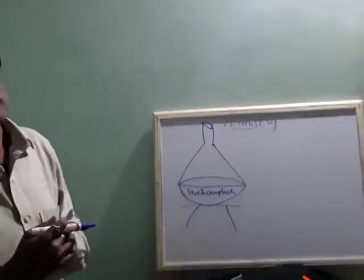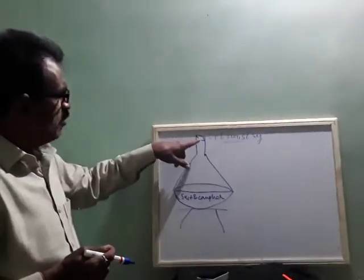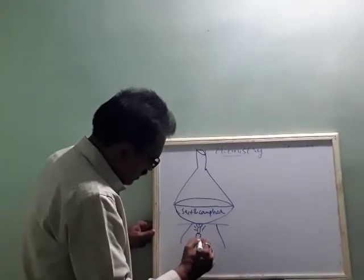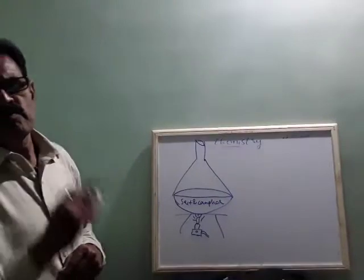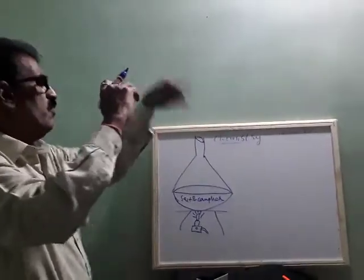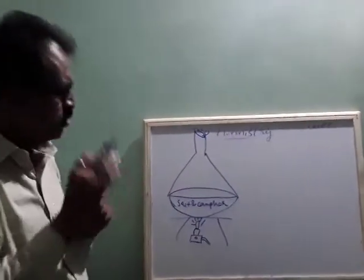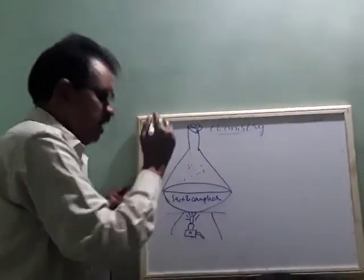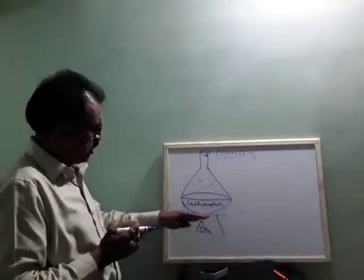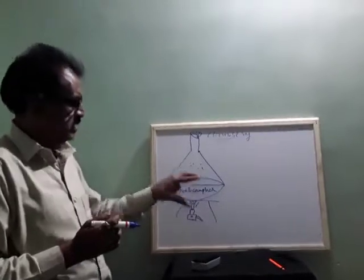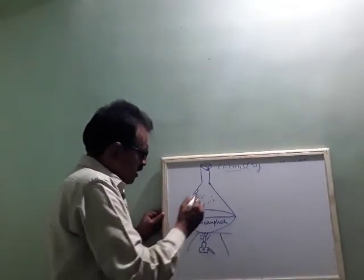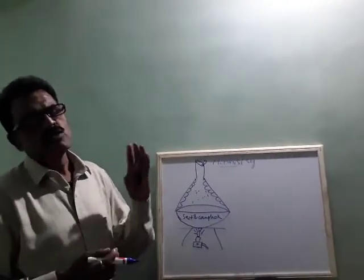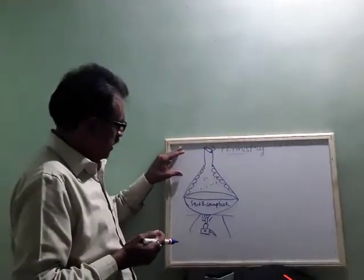When you start heating, salt remains in the china dish. But camphor converts into vapors. After converting to vapors, we stop supplying heat. These camphor particles will then attach to the inner surface of the funnel, because when you cool the gaseous state it converts back into solid state — solid to gaseous, gaseous back to solid. In this way we are able to separate salt and camphor, or salt and ammonium chloride.